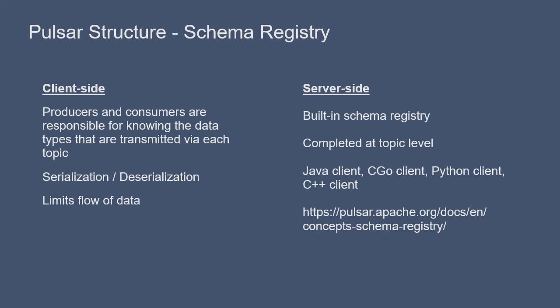As of this recording, in Q1 of 2021, the Schema Registry is only available for the Java Client, CGo Client, Python Client, and C++ Client. For an up-to-date list of the supported schema registries, you can visit the address shown on the slide here in the Pulsar documentation, in the Concepts Schema Registry section.